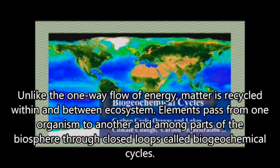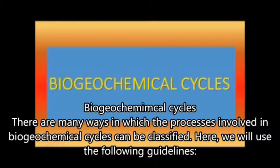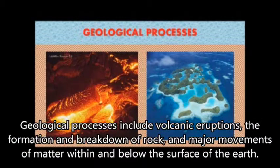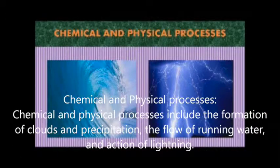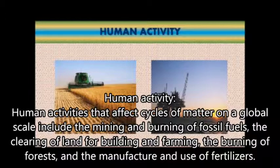Elements pass from one organism to another and among parts of the biosphere through what ecologists call biochemical cycles. These cycles can be classified by the following processes: biological processes, consisting of any activities performed by living organisms; geological processes, including volcanic eruption, deformation and breakdown of rock, and major movement of matter within and below Earth's surface; chemical and physical processes, including the formation of clouds and precipitation, the flow of running water, and the action of lightning; and human activities, such as the mining and burning of fossil fuels, the clearing of land for building and farming, the burning of forests, and the manufacture and use of fertilizers.